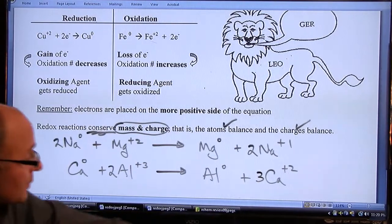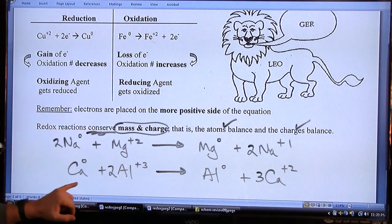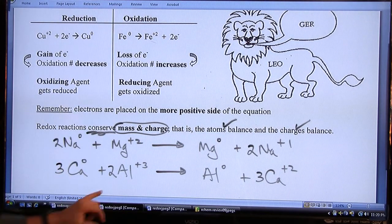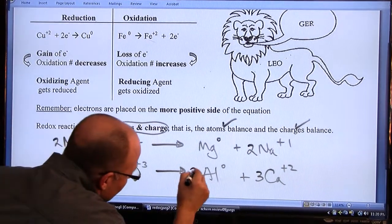And now finish it off by balancing the atoms. You now have 3 Ca's here, there's only one here, so put a 3 here. And there's 2 Al's on the left, and there's only one here, so put a 2 here.